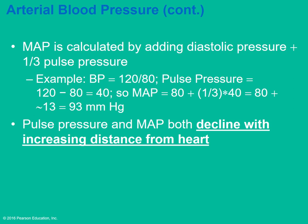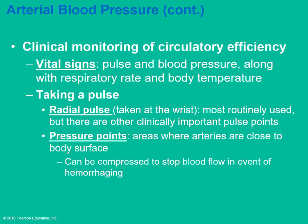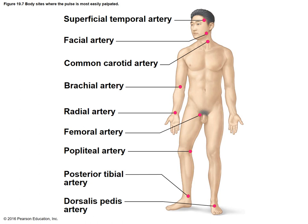Both pulse pressure and mean arterial pressure decline the farther away from the heart. You can measure cardiovascular efficiency through vital signs: pulse, blood pressure, respiratory rate, and body temperature. To take a pulse, you can get the radial pulse at the wrist. There are pressure points where arteries are very close to the body surface — these can be compressed to stop blood flow in case of bleeding. This diagram shows where the major pressure points are.